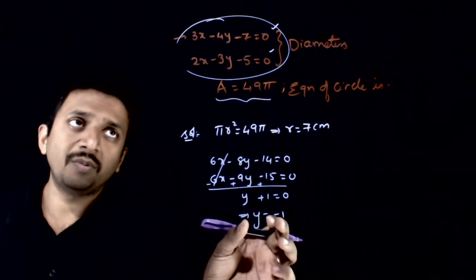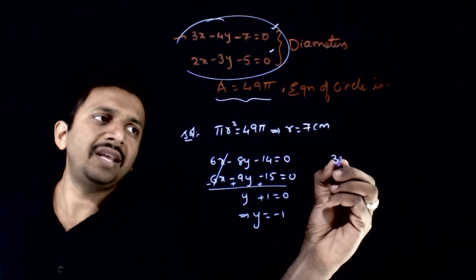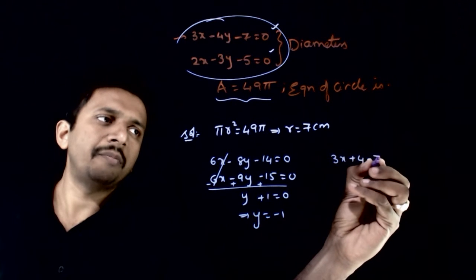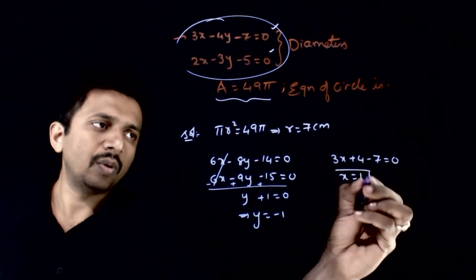The value of y has to be equal to -1. If you put y = -1 here, you get 3x + 4 - 7 = 0, so x = 1.